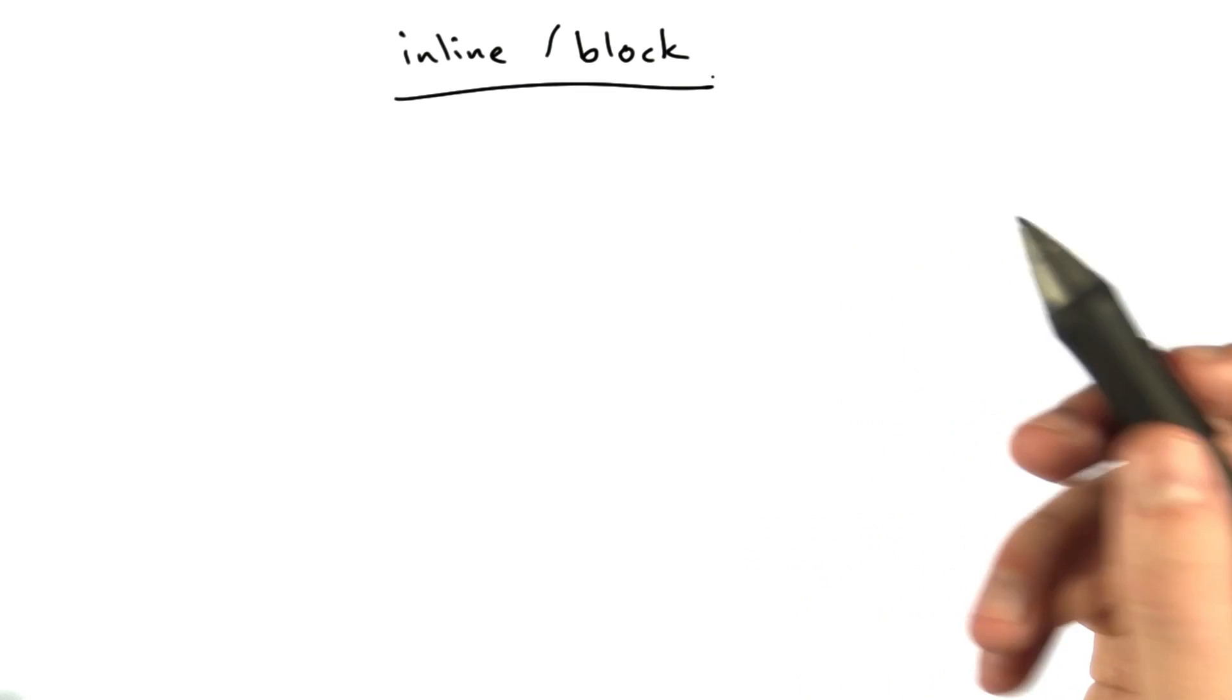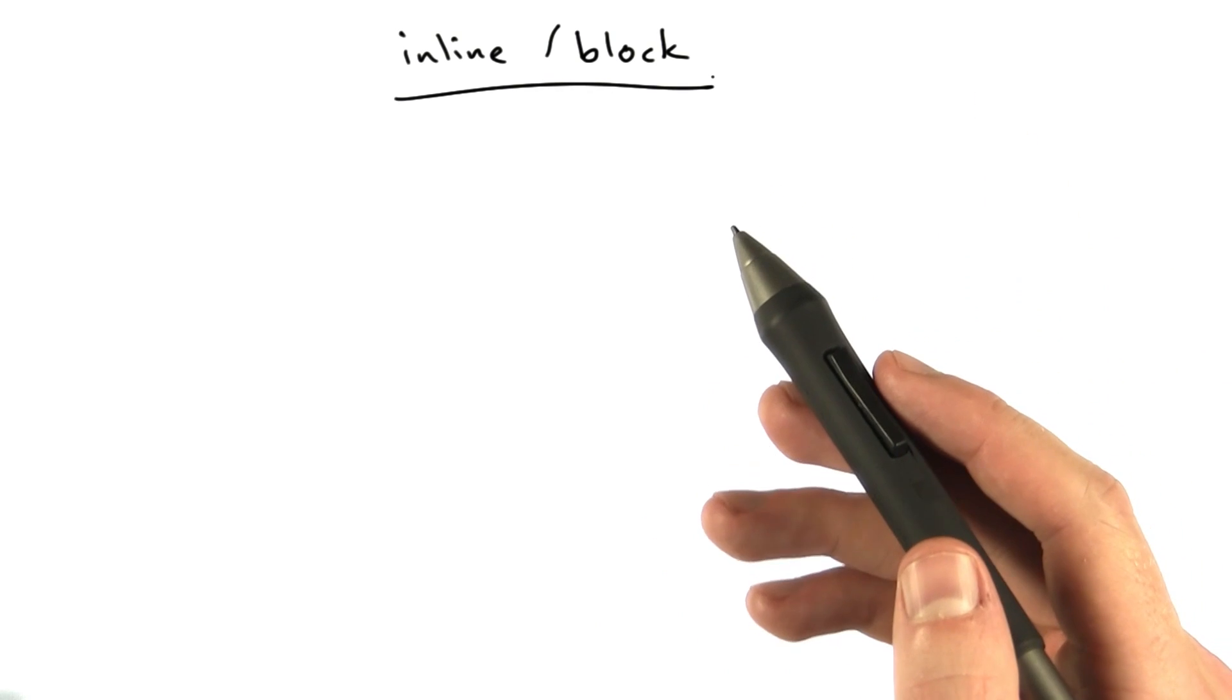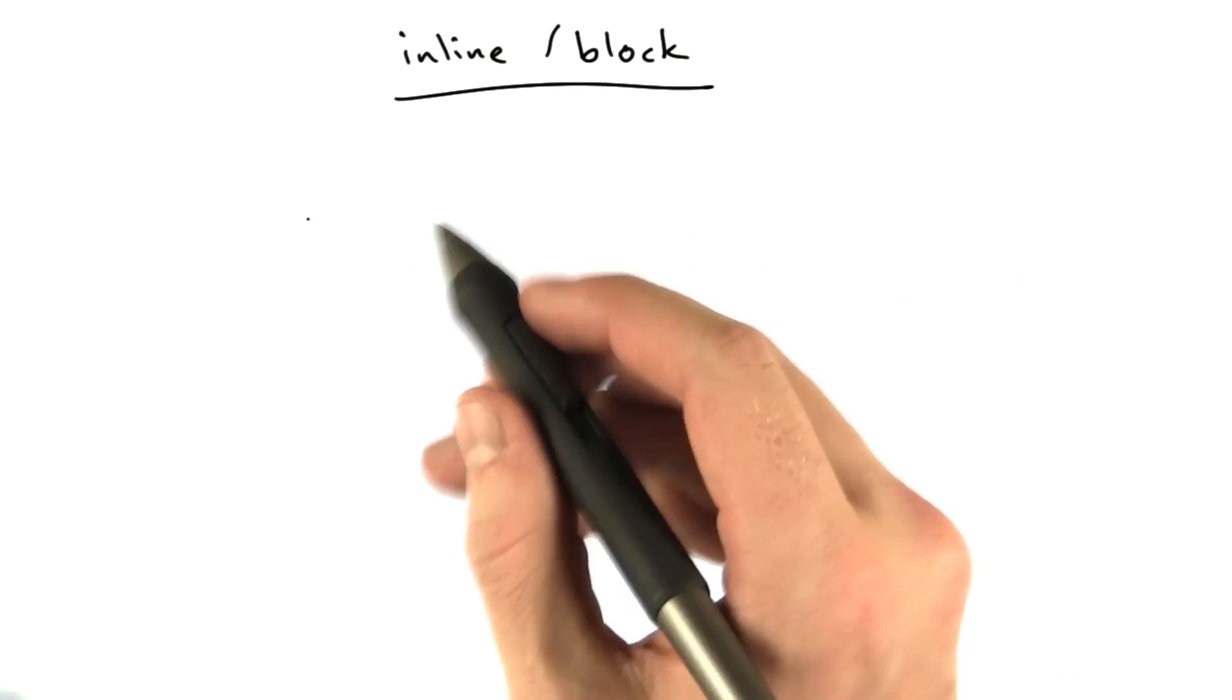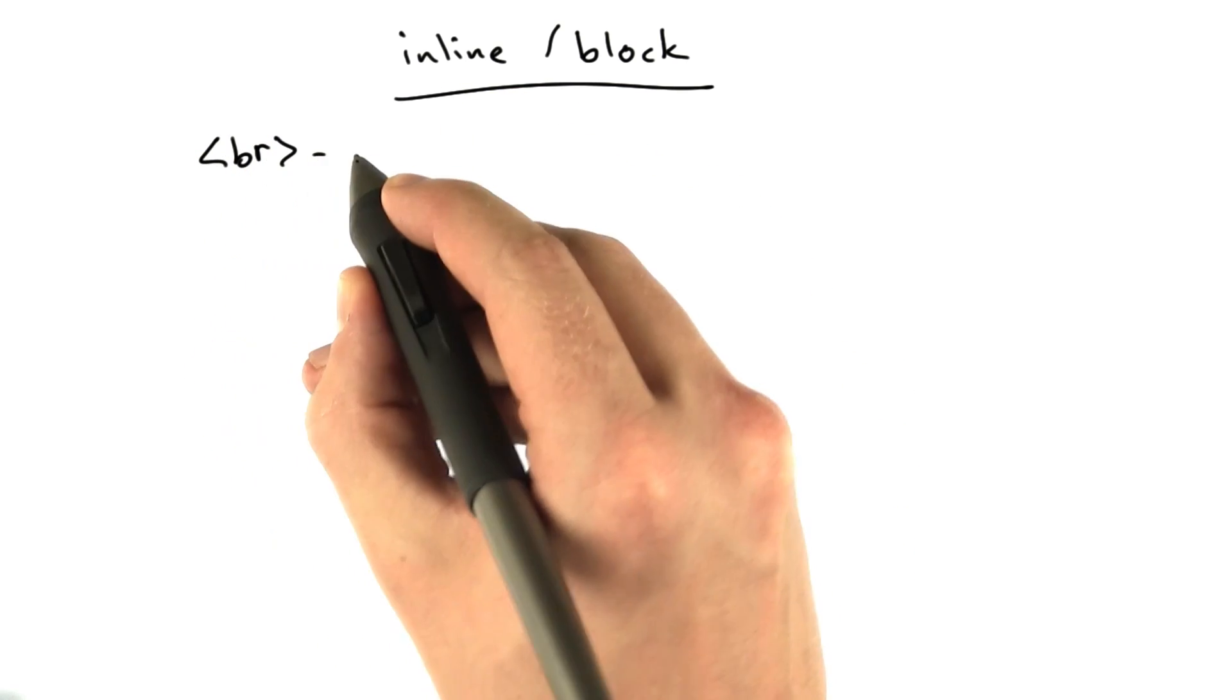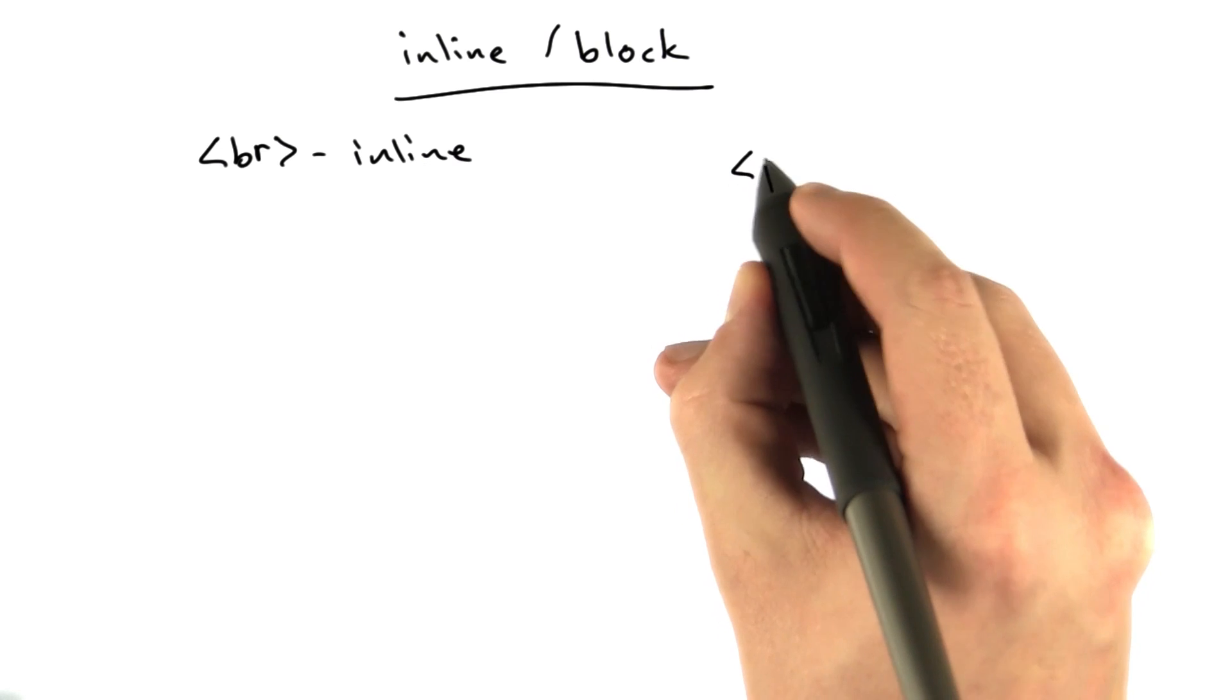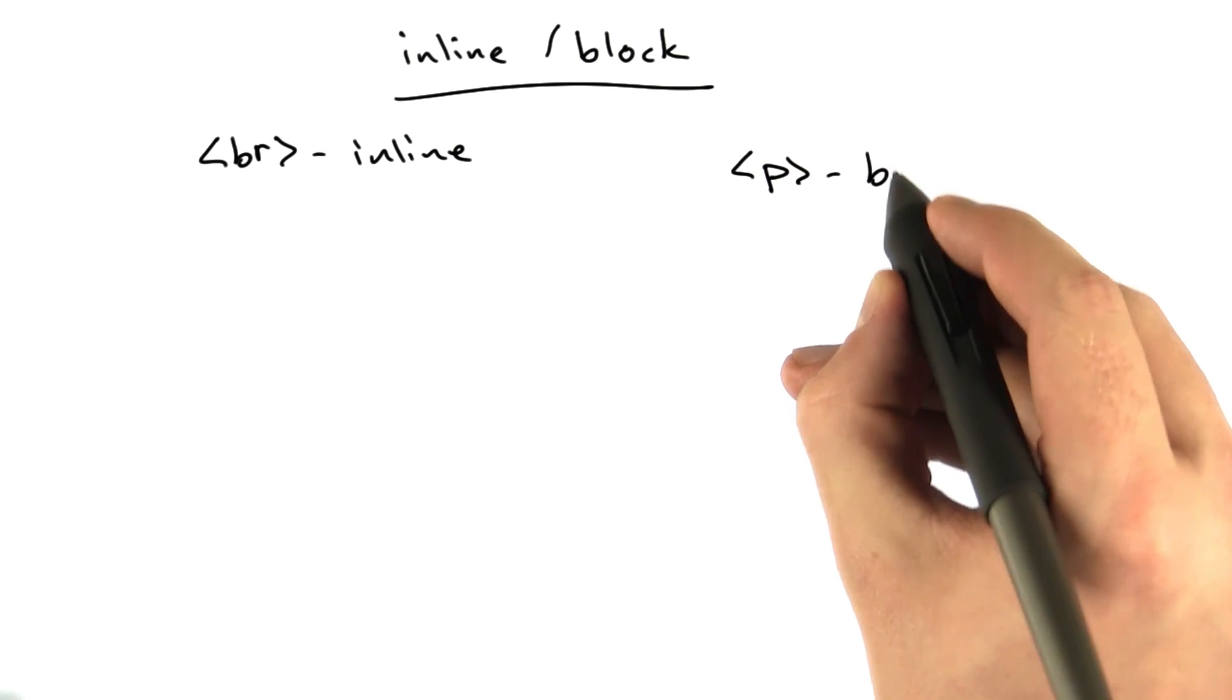Okay, why do we have two different ways of making new lines? Why do we have a br tag and a p tag? The answer is because the br tag is what we call inline, and the p tag is what we call block.